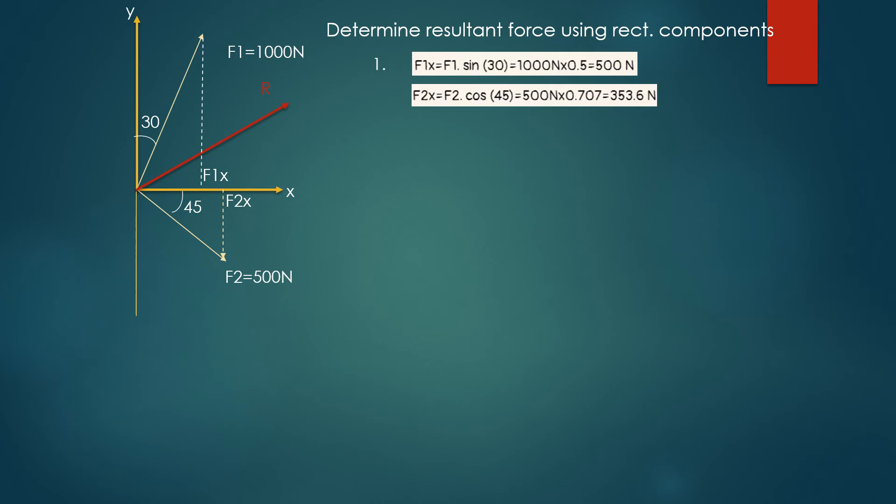F2x equals F2 times cosine of 45 degrees, which equals 353.6 newtons. As a result, Rx is the summation of these two numbers, which makes 853.6 newtons. The next step is to determine F1 and F2 components along y.